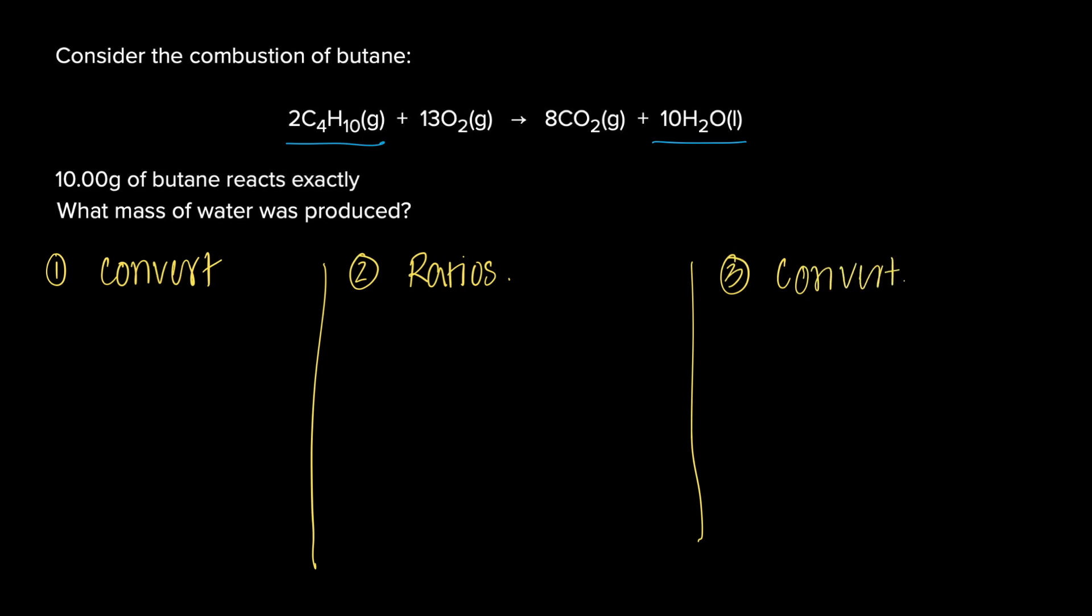So first we need to find out the moles of butane over here. Butane is the mass of 10 grams over MR, which is 58. That is 0.172 moles.